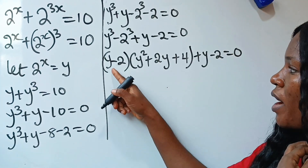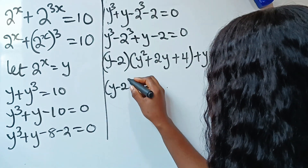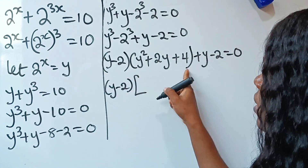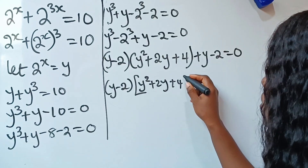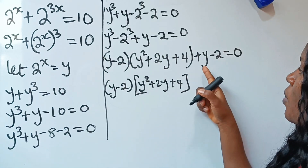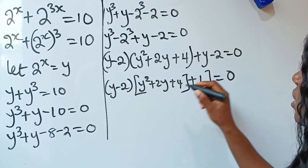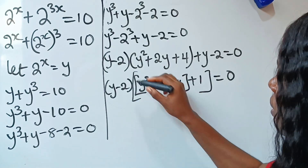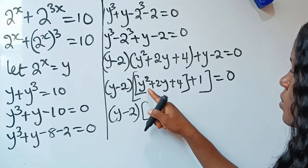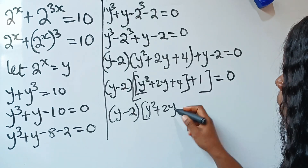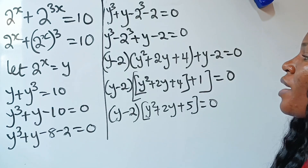We have (y minus 2) multiplied by (y squared plus 2y plus 4), plus (y minus 2), equals 0. We have (y minus 2) appearing in both terms, so we factorize it out: (y minus 2) times (y squared plus 2y + 4 + 1) equals 0, giving us (y minus 2)(y squared plus 2y plus 5) equals 0.